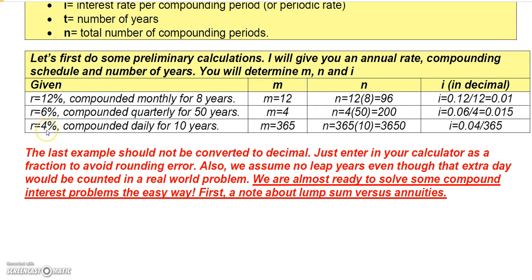If r was 4% and you compounded daily for 10 years, we would assume m is 365 for daily compounding, then 365 times 10 years gives 3650 compounding periods. We don't fool with leap years on these formulas. The daily rate would be 0.04 divided by 365.